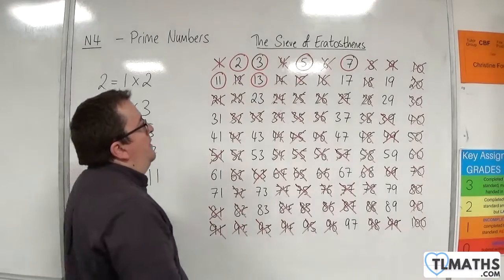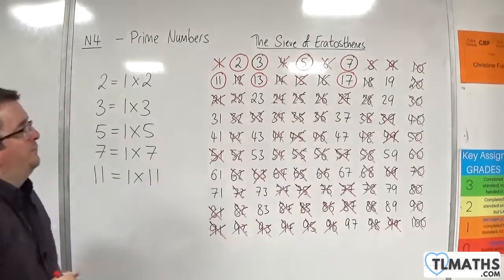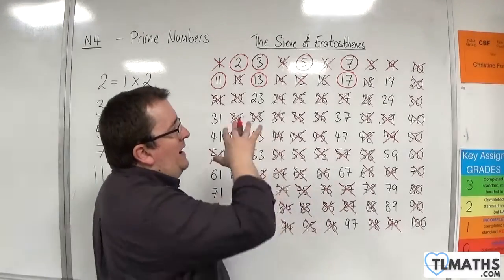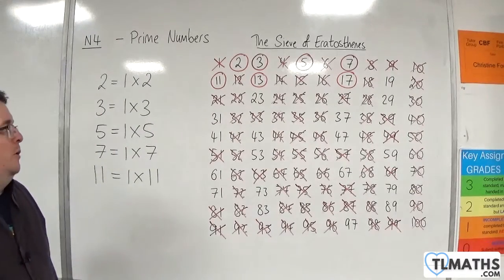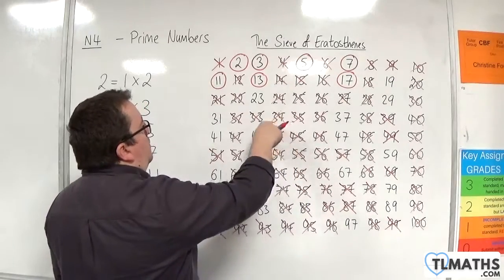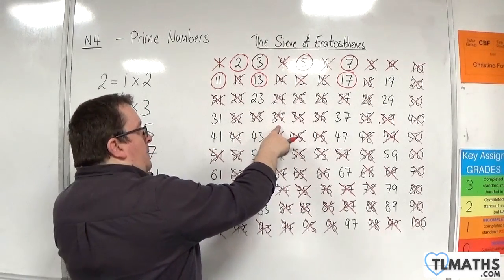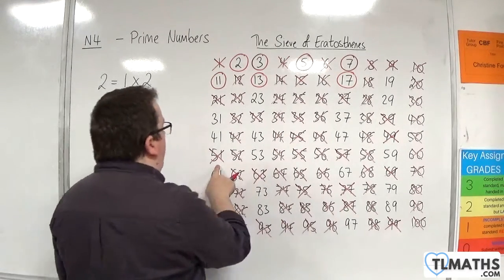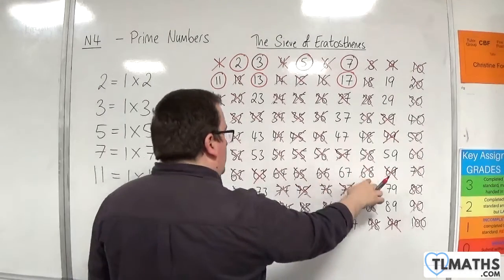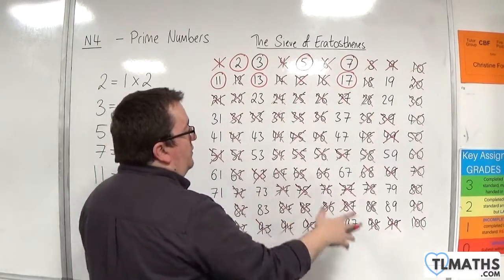So next prime number is seventeen because that's the next one uncrossed off. So seventeen, so any further multiples must not be prime. So that would be seventeen followed by thirty-four, then fifty-one, then sixty-eight, then eighty-five, and then the next one would be one hundred and two.